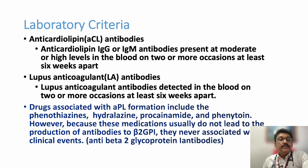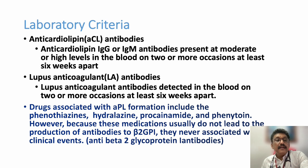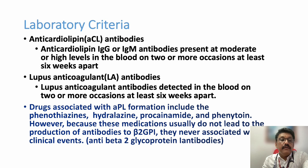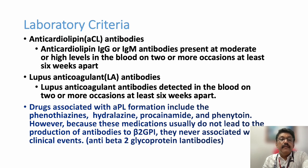For laboratory diagnostic criteria, anti-cardiolipin antibodies should be positive — specifically anti-cardiolipin IgG and IgM antibodies present at moderate to high levels. Lupus anticoagulant antibodies should be detected on one or two occasions at least six weeks apart. Some drugs like phenothiazines, hydralazines, procainamide, and phenytoin can produce APLA syndrome. However, in drug-induced APLA syndrome, anti-beta-2-glycoprotein antibodies may be negative.